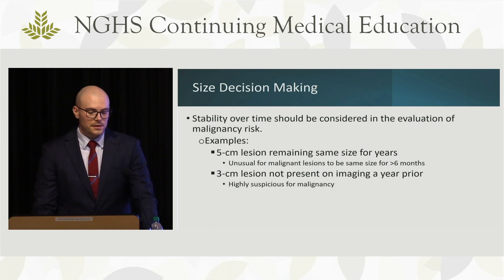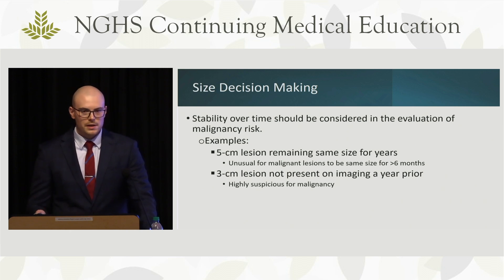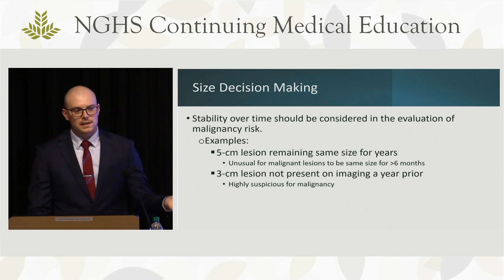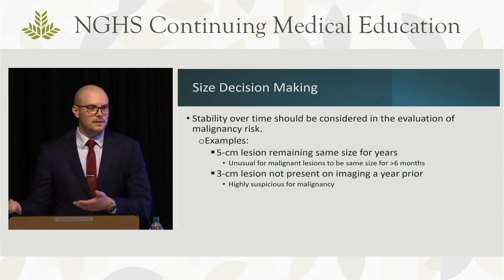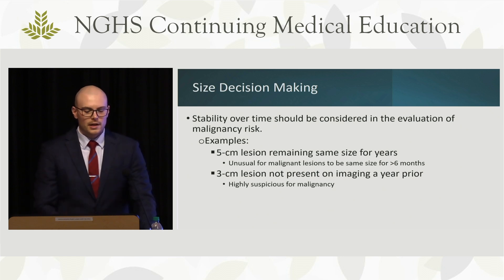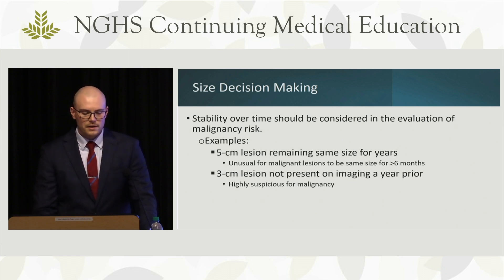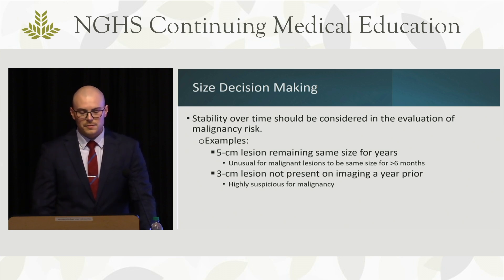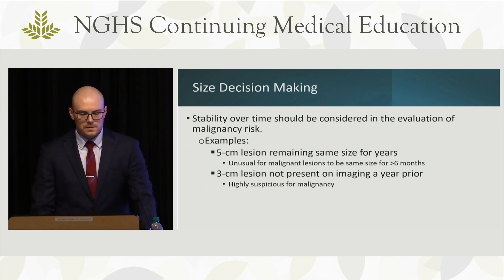Stability over time must be considered in evaluating malignancy risk. A 5-centimeter lesion that's been present for many years is less likely to be malignant — malignant lesions staying the same size for more than six months is less likely. But a 3-centimeter lesion that wasn't present on imaging a year ago is definitely suspicious for malignancy. An exception to the size recommendation is adrenal myelipomas, which have very specific imaging characteristics — a marbling appearance. These can present with pain, mass effect, rupture, or bleeding, and we recently took out a 13-centimeter myelipoma robotically.